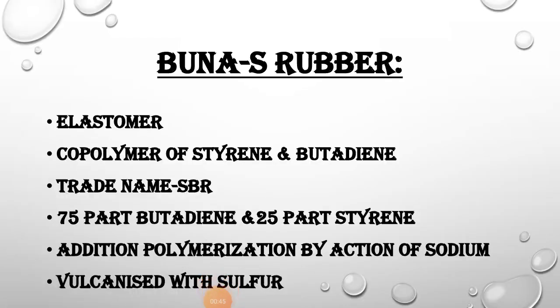Let's start with Buna S rubber. Buna S is an elastomer. The polymer which, on stretching, elongates and when the force has been relaxed, it regains its original position — that is, it possesses the property of elasticity. So Buna S comes under elastomer polymers. It is a co-polymer of styrene and butadiene, meaning we are using two different monomers for the preparation of Buna S rubber.